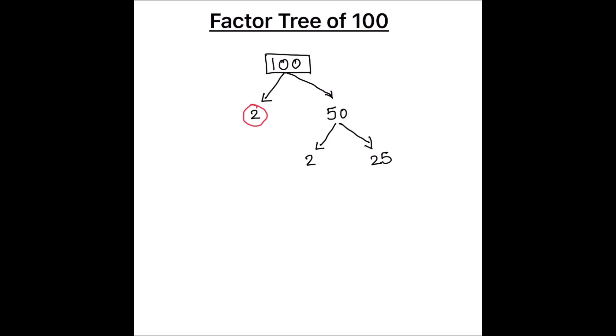Two times twenty-five is fifty. Here we got two factors: two and twenty-five. One of the factors, which is two, is a prime number, so we are going to circle that. Next we will divide twenty-five. Twenty-five can be broken down into two factors: five times five is twenty-five.